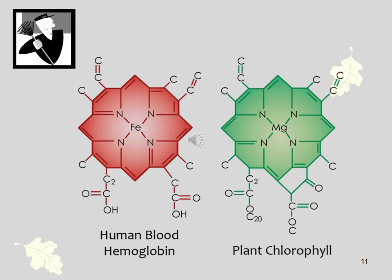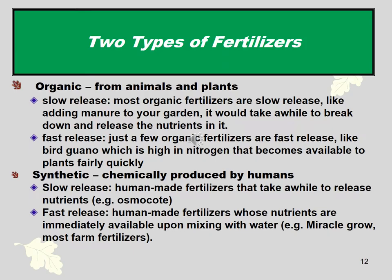An interesting comparison: the human blood molecule hemoglobin and the plant chlorophyll molecule are amazingly similar in structure. In hemoglobin the center is iron (Fe); in chlorophyll the center is magnesium. The chlorophyll molecule also has a 20-carbon chain tail that makes it quite different overall, but the core structure is remarkably similar — which makes you wonder about some distant evolutionary relationship between plants and animals.